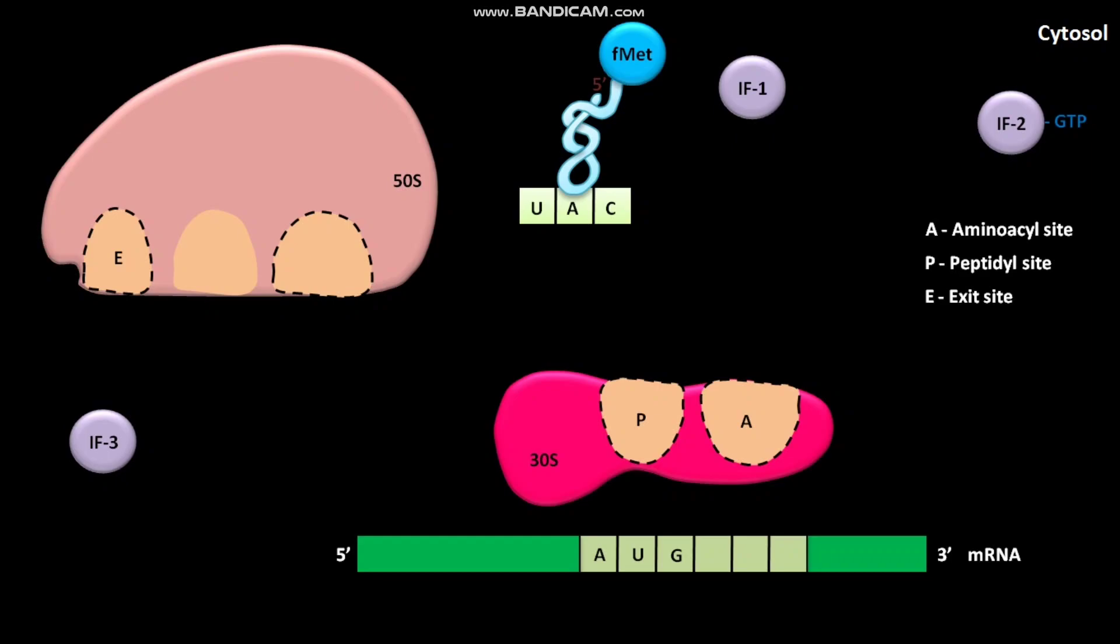During translation initiation in the bacterial cytosol, first of all, the 30S ribosomal subunit binds to the initiation factor IF3. IF3 prevents the 30S and 50S ribosomal subunits from combining prematurely.